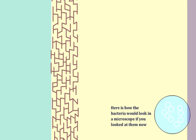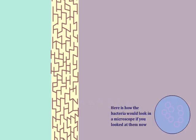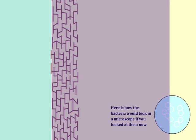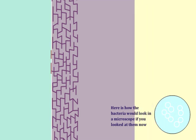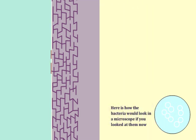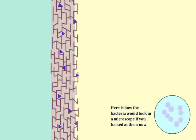After heat-fixing the slide, it is first flooded with crystal violet for one minute and then washed. The stain colors the bacterial cell wall blue, and the bacteria would appear blue in the microscope if examined at this point in the procedure.